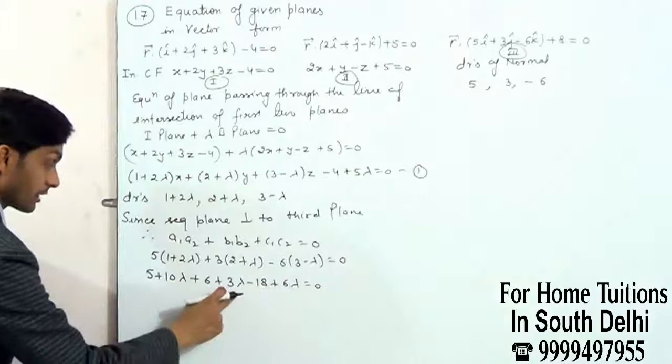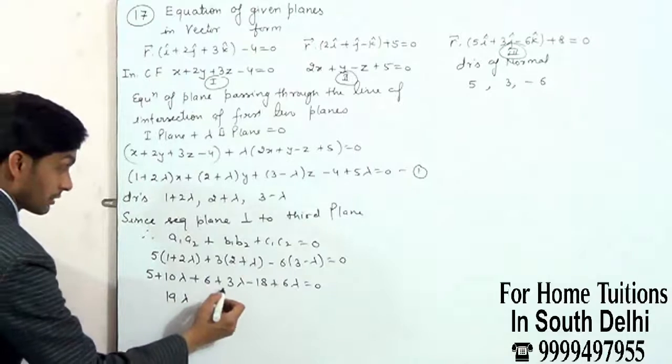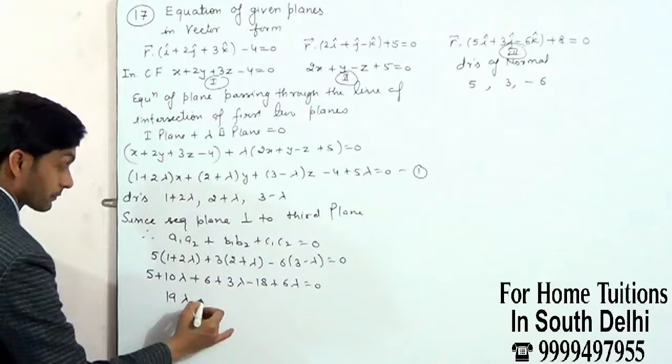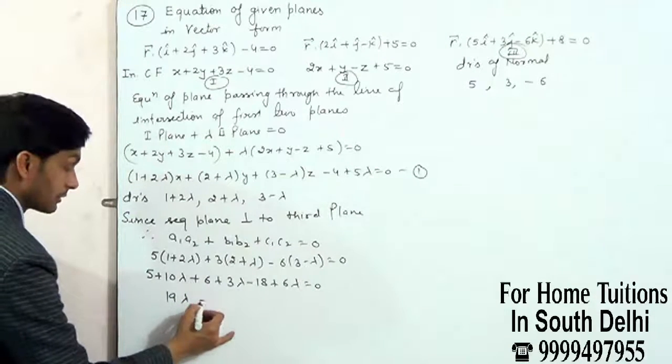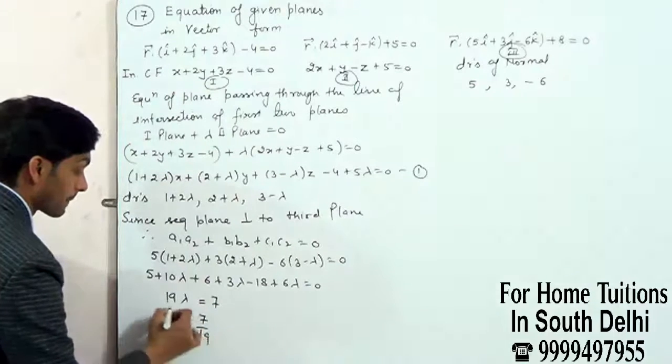19 lambda minus 7 equals 0. So lambda value is 7 by 19.